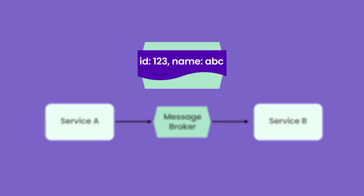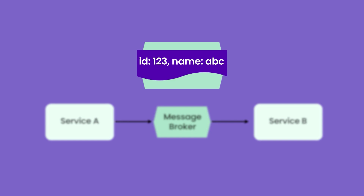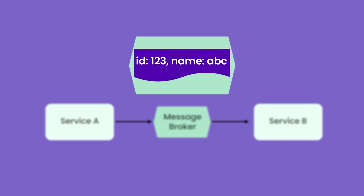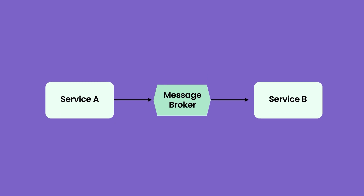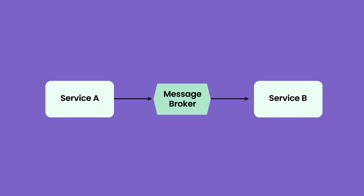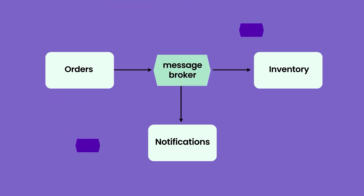In this scenario, the ID 123 and name ABC is the event payload, or the event. The whole packet of data that consists of this event, which is termed as the message, is transferred over the message broker. We have different services and different events could be emitted from one service or multiple services, and other services can be consuming those events.